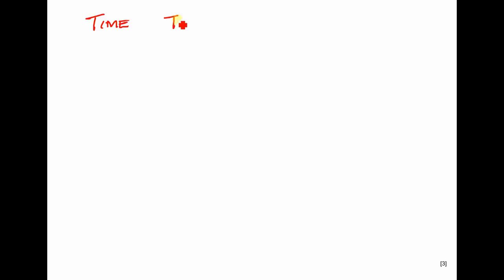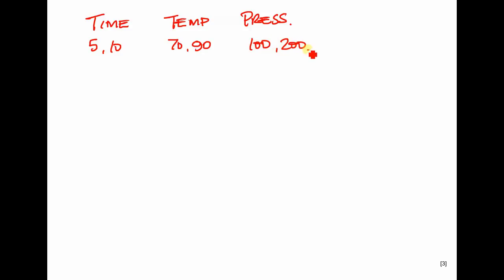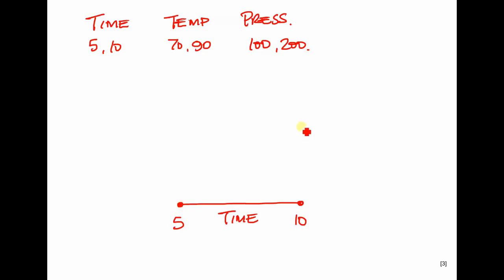Let's think about three variables: time, temperature, and pressure. Time will be five to ten seconds, temperature 70 to 90 degrees, and pressure 100 to 200. We'll test time at the low and at the high only — five and ten — and then test temperature simultaneously, giving us four test combinations.